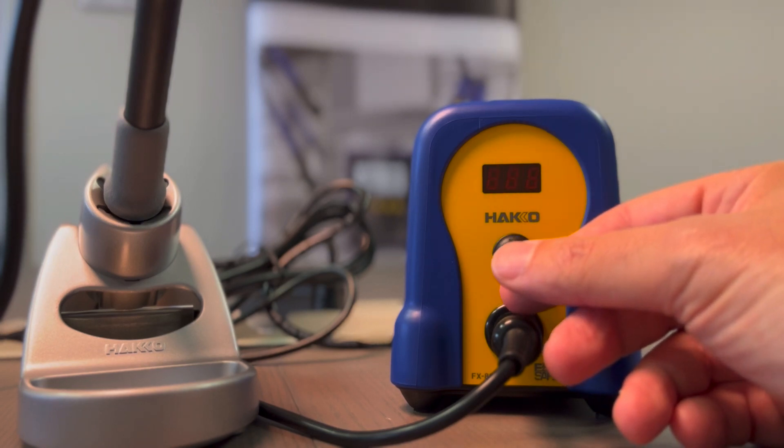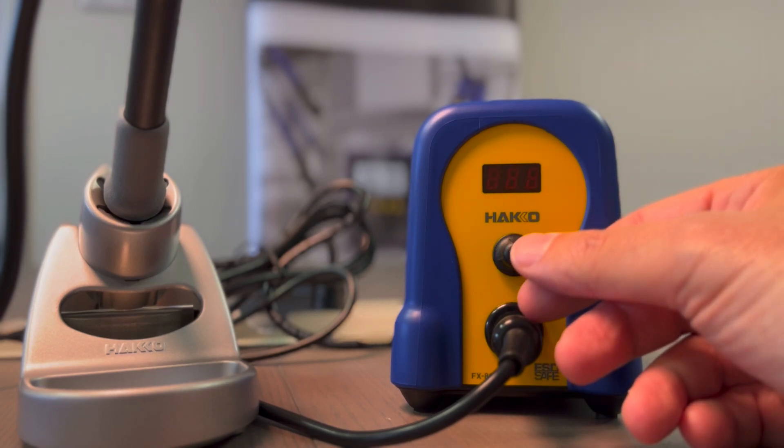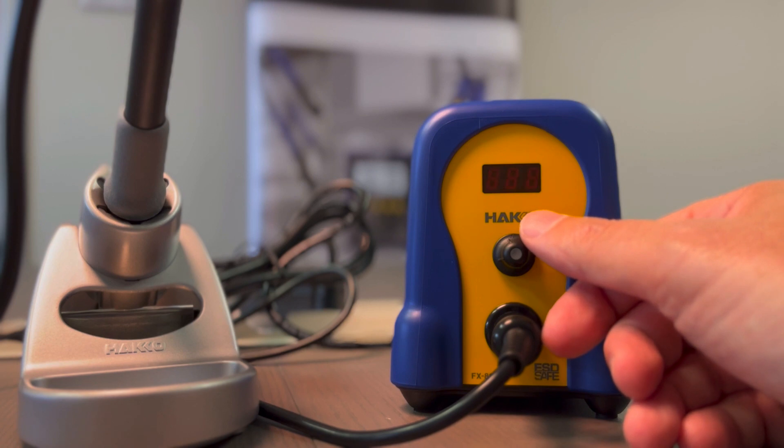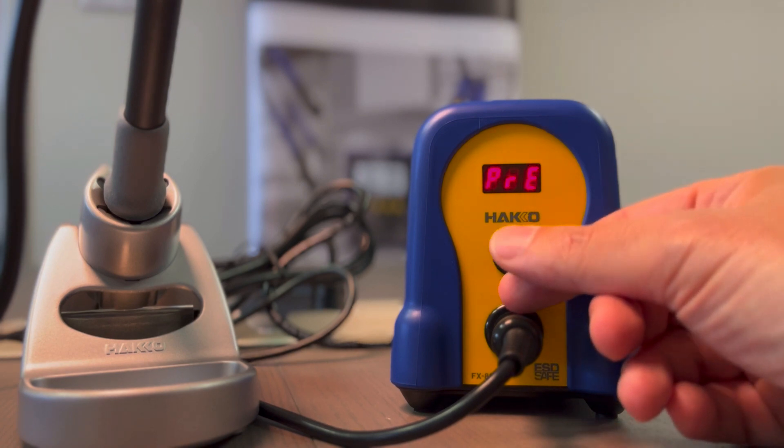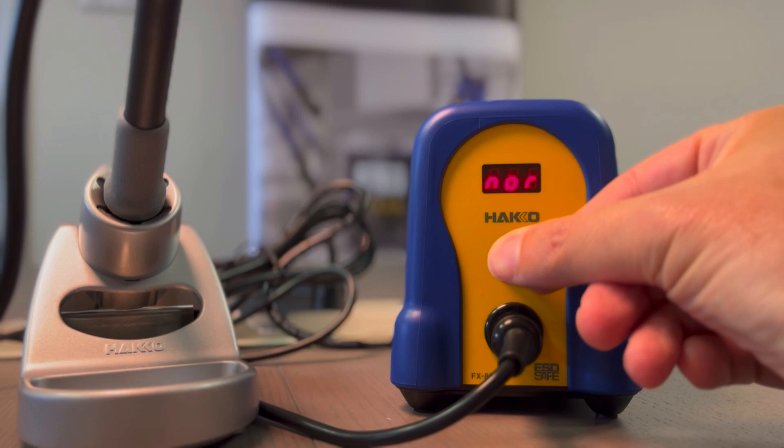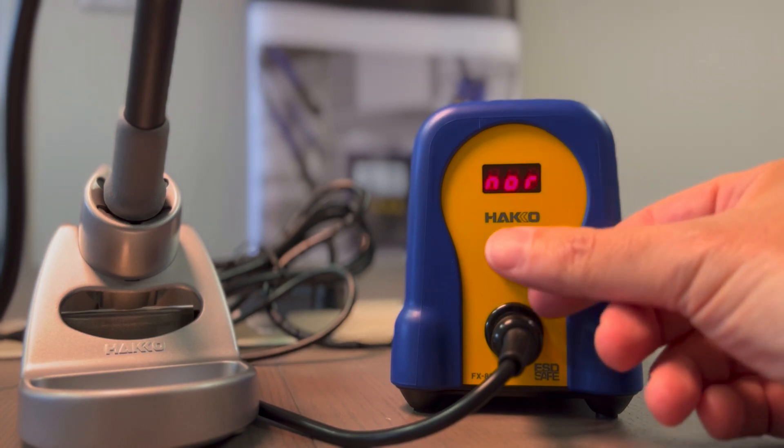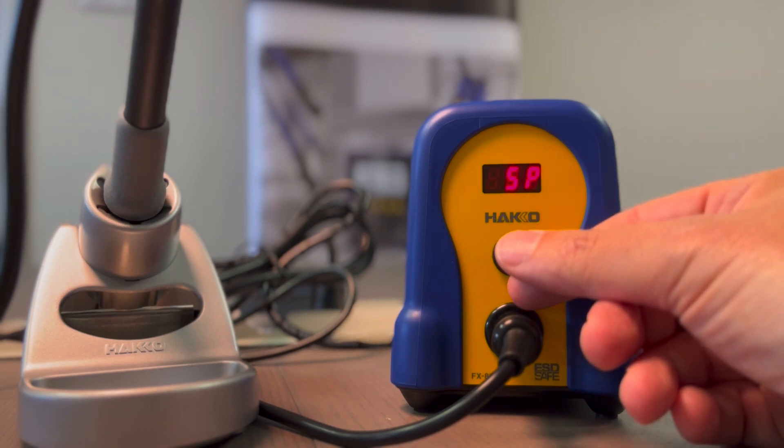One of the most important settings is number 11. This is where you can switch the soldering station mode from normal to pre-selected. In normal mode, we use the unit like before, just changing the temperature moving the knob. With pre-selection, we can set up up to five different fixed temperatures.